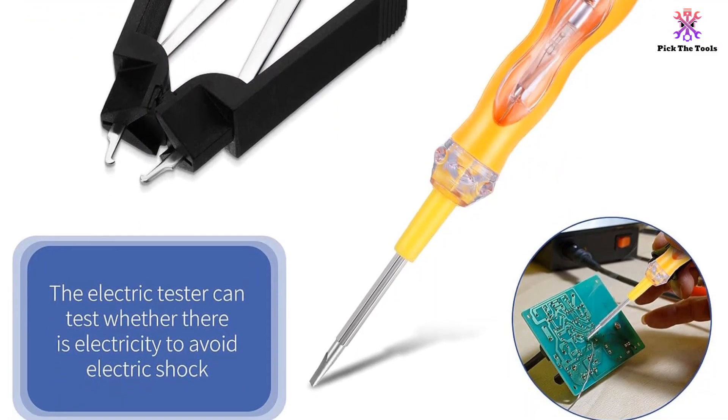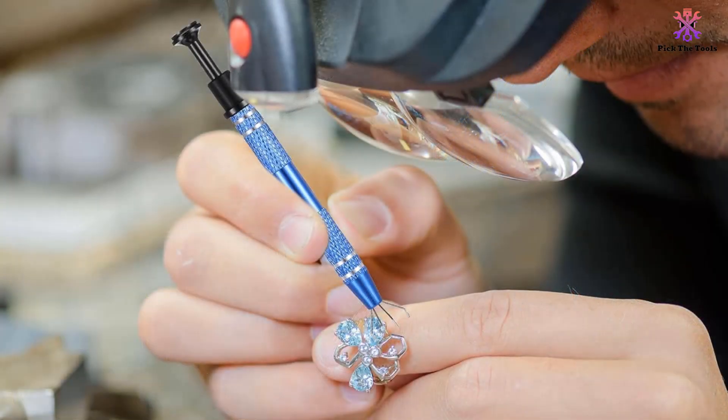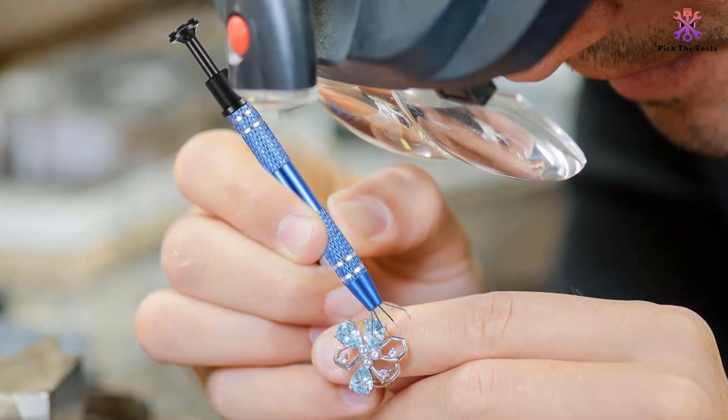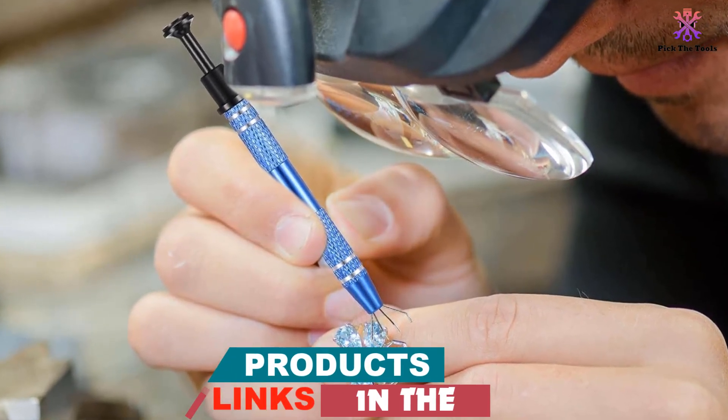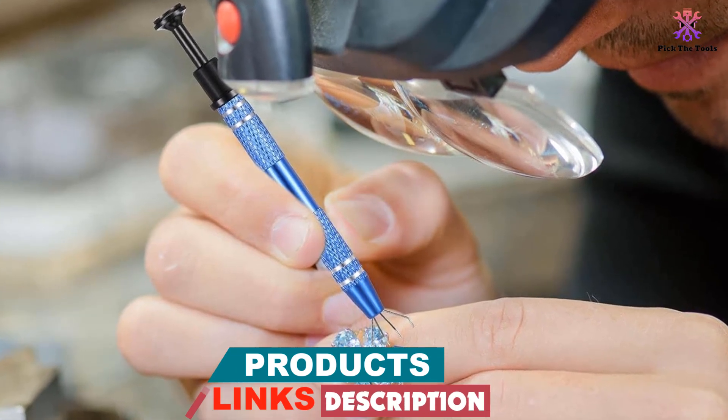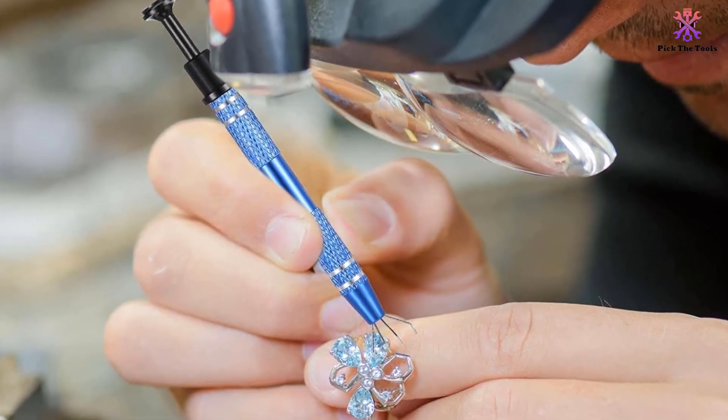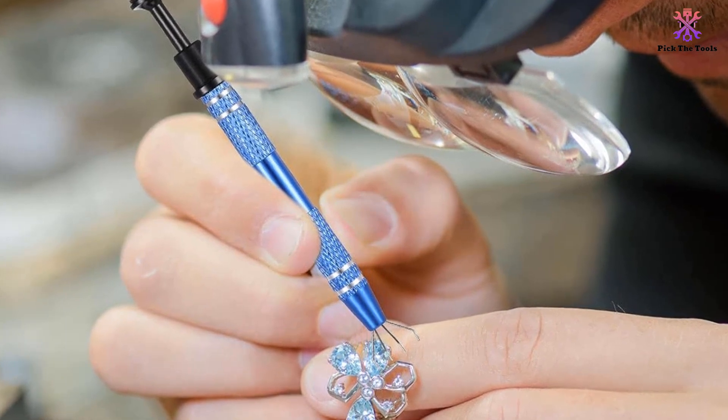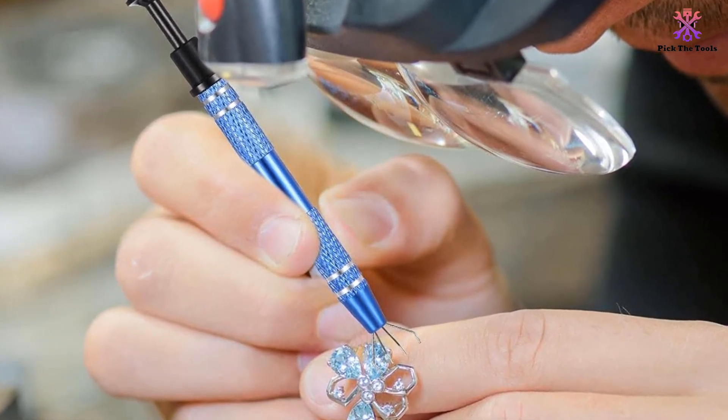The 4-claw picker can firmly grasp small objects, the U-shaped IC extractor reduces hand fatigue, the small hook design of the PLCC IC chip puller can quickly pull out and install IC conductors, and the electric tester can test whether there is electricity to avoid electric shock.